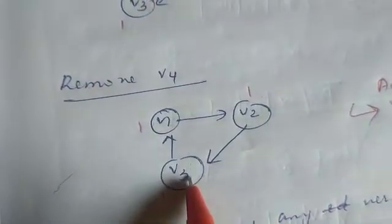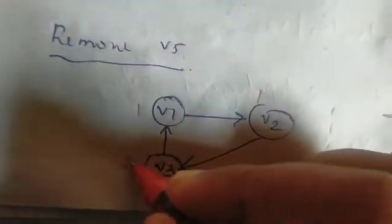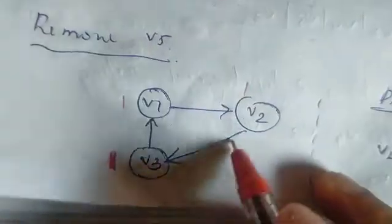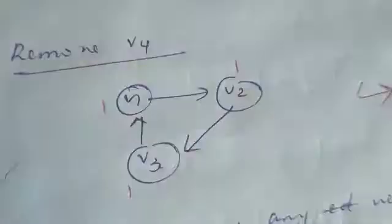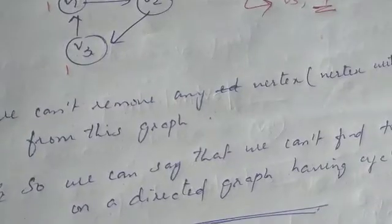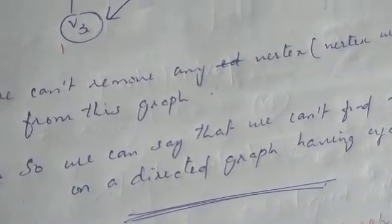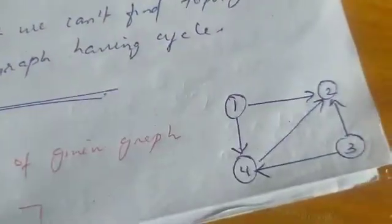We cannot apply topological sort to a graph that is not a DAG. We would have two sorted lists but the algorithm does not work for cyclic graphs.